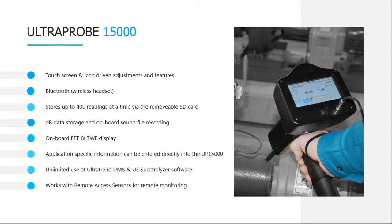When you go to the website you'll notice two versions of Ultra Trend DMS available: version 5.4.15 and version 6. For most users you'll want DMS 5.4.15. The main difference is that DMS 5 is Access-based and DMS 6 is SQL-based; DMS 6 also communicates with the UE Forecast. Unless you're using the UE Forecast, most of you will need 5.4.15. There's only one version of the Spectralizer software.